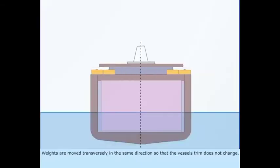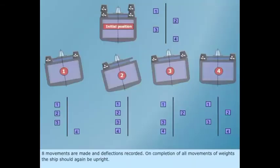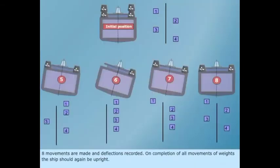Weights are moved transversely in the same direction so that the vessel's trim does not change. 8 movements are made and deflections recorded. On completion of all movements of weights, the ship should again be upright.